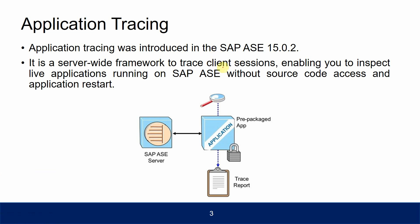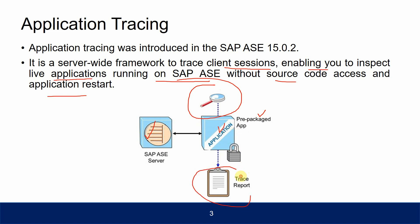Application tracing is a server-wide framework to trace client sessions, enabling you to inspect live applications running on Adaptive Server without source code access and without an application restart. The application is running on Adaptive Server, and you are tracing it without affecting the application, without getting into the source code, and generating a trace report.